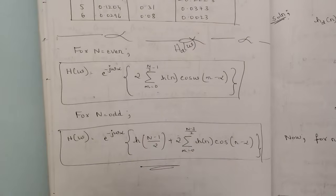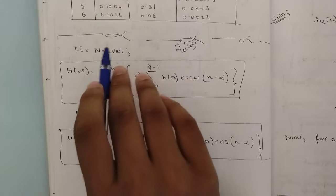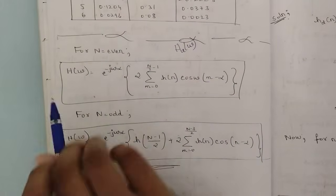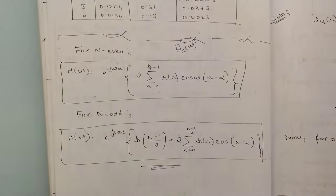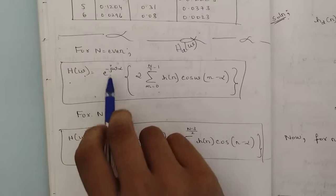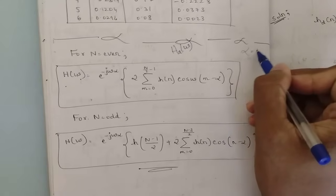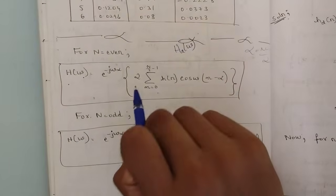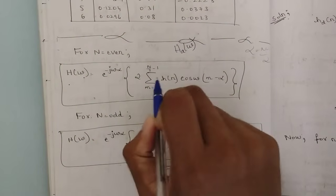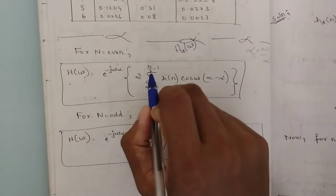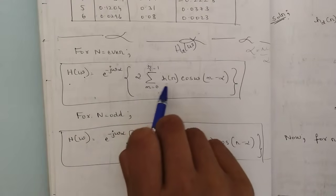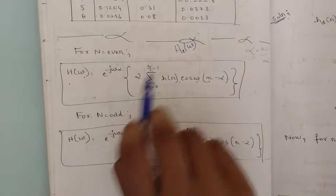For finding the actual frequency response H(ω), we have two different formulas. For N even, the formula is: H(ω) = e^(−jωα) × 2 × Σ[n=0 to N/2−1] H(n) cos(ω(n − α)), where α = (N−1)/2. This is the formula when the filter length is even.